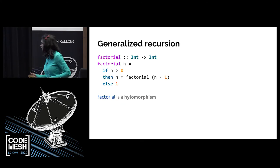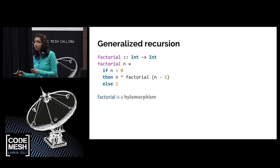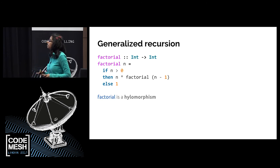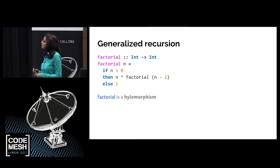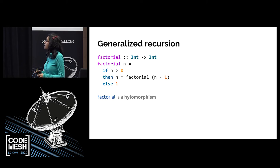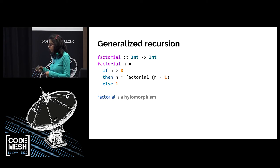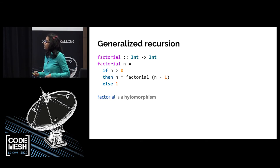We can keep going. What about recursion itself? Let's say I don't have a recursive data structure — I just have a recursive function. This is a factorial function, one of the ones that plagues us when we start functional programming. `factorial n = if n > 0 then n * factorial(n-1) else 1`. Actually, factorial is kind of special: it builds up a call tree and collapses it. So we can call it a hylomorphism. Maybe we can use the tools we have to tackle this problem.